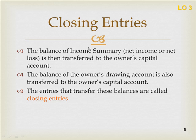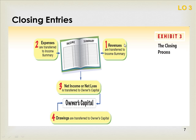The entries that transfer these balances are called closing entries, and there are four closing entries. The first closing entry is to close revenues to income summary. The second entry is to close expenses to income summary. The third entry is to close income summary to capital. The fourth entry is to close drawing to capital. They are prepared in this order — do not try to move them out of this order, it will be incorrect.